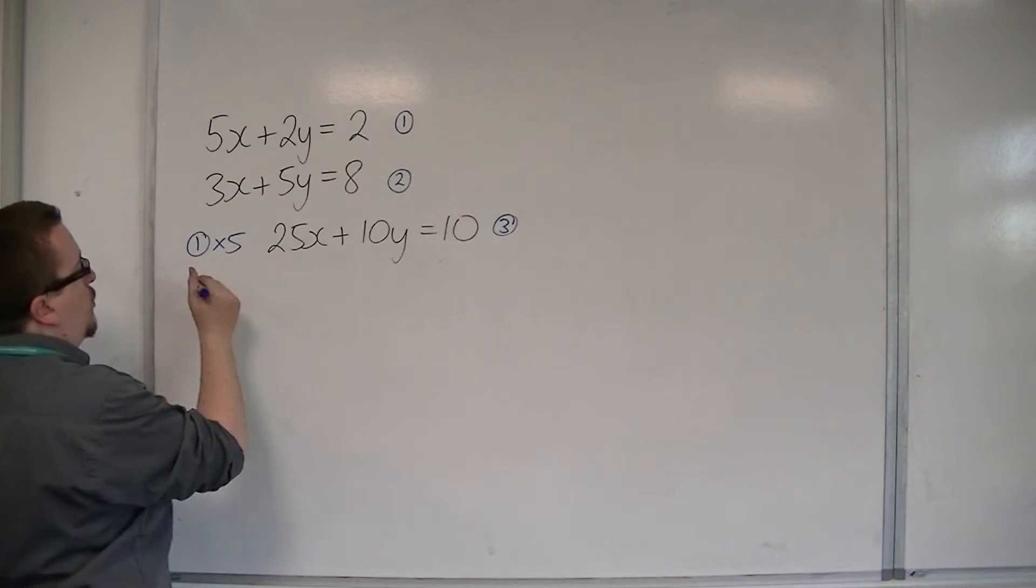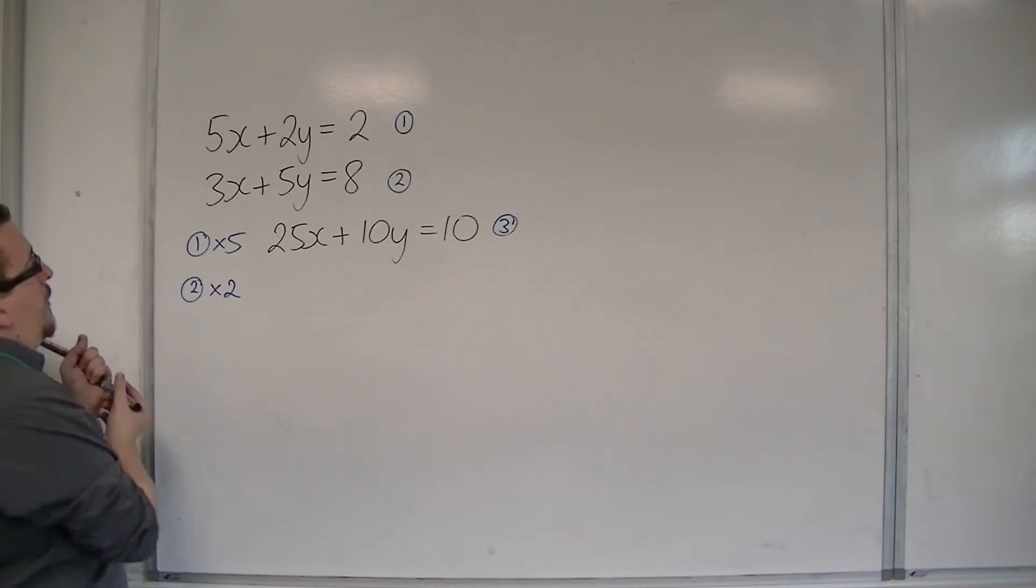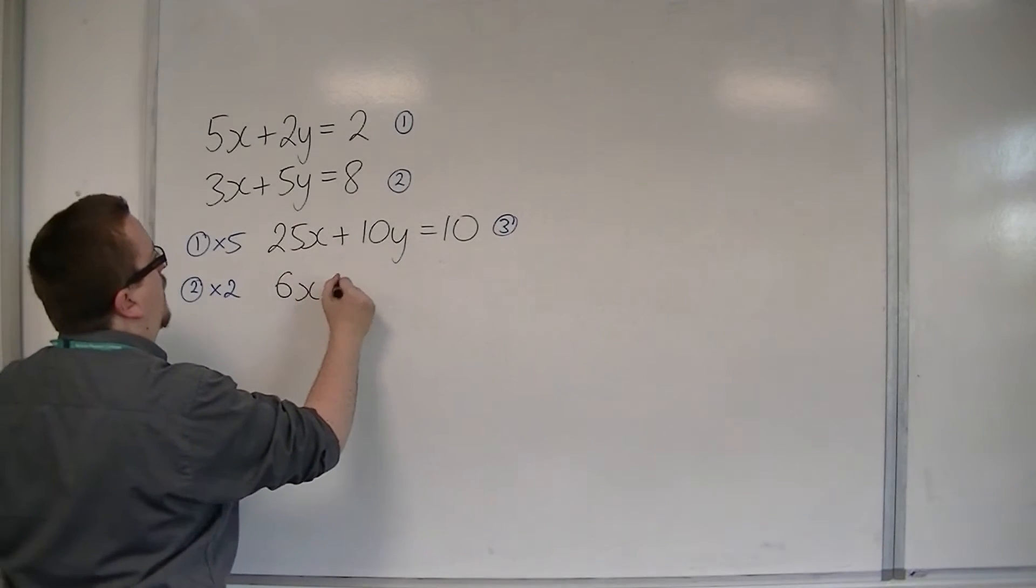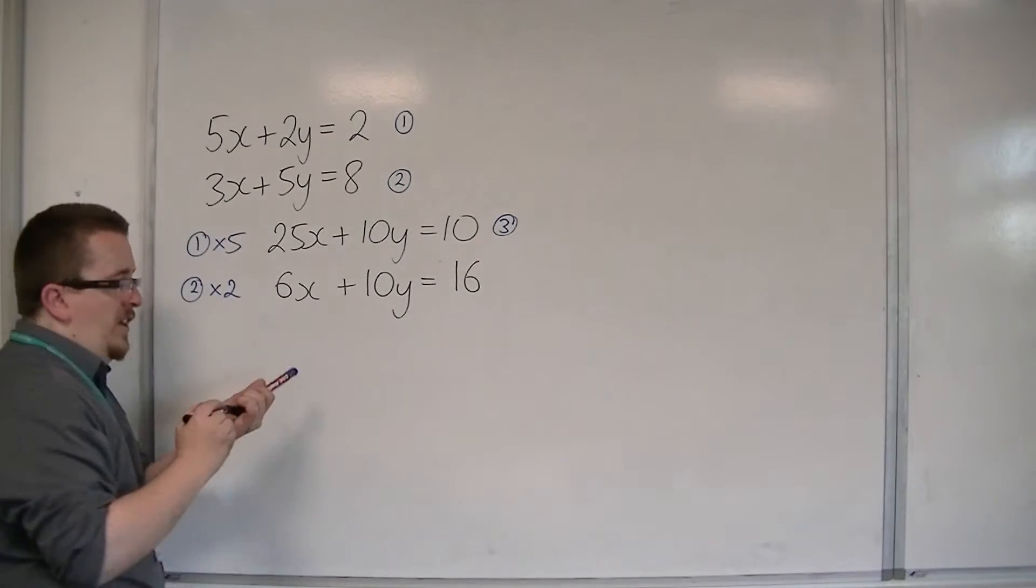And I'm also going to multiply equation 2 by 2. I'm going to get 6x plus 10y is equal to 16. And that's going to be equation 4.